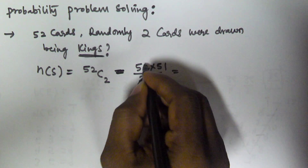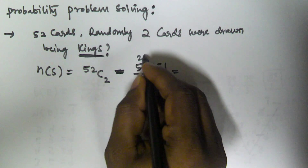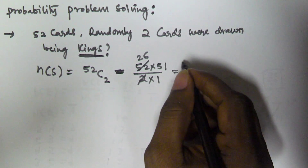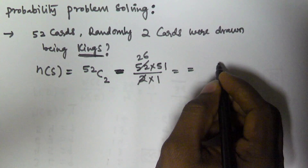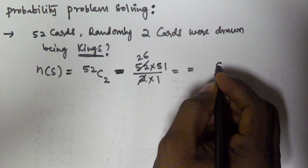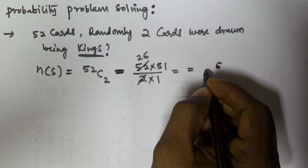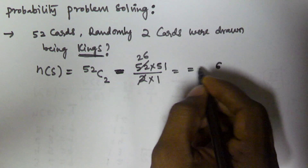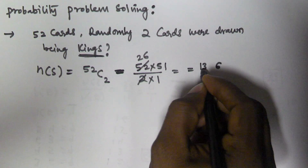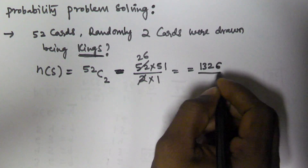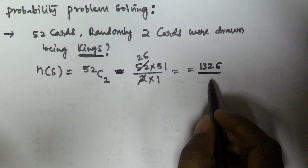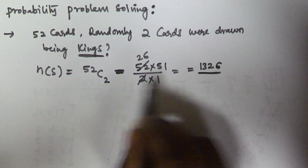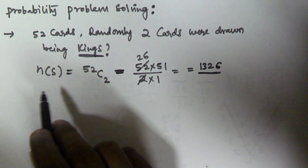52C2 is going to be 52 into 51 by 2 into 1, which equals 26 into 51, and that is going to be 1326. So these are the number of elements in the sample space.